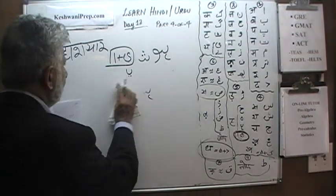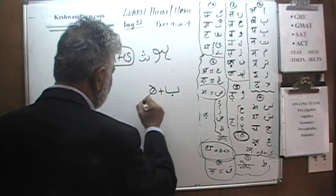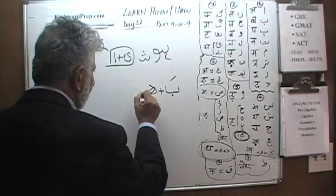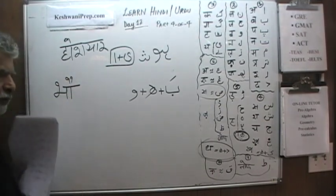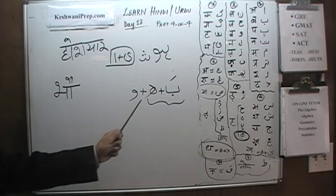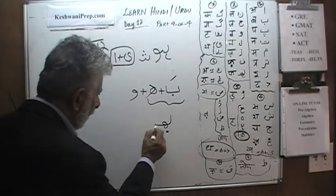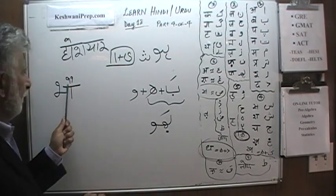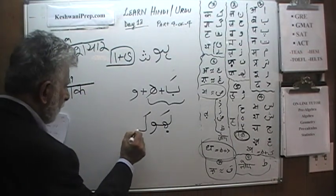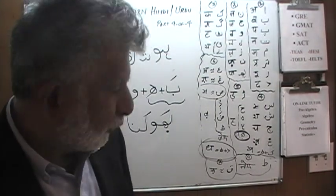Let's do the next one with Badi Oki Matra. We talked about this just a moment ago — Ba with Do Chashmi Hai makes Bha. But we don't need a Bha here; it has a Zabar and a Vav, so we need a Bo. What appears as one letter Bha in Hindi will be these two combined in Urdu. To that Bha we add Vav, and with the Zabar it becomes a long Bo. Then Ka, then Na — Bhaukna, as in to bark.